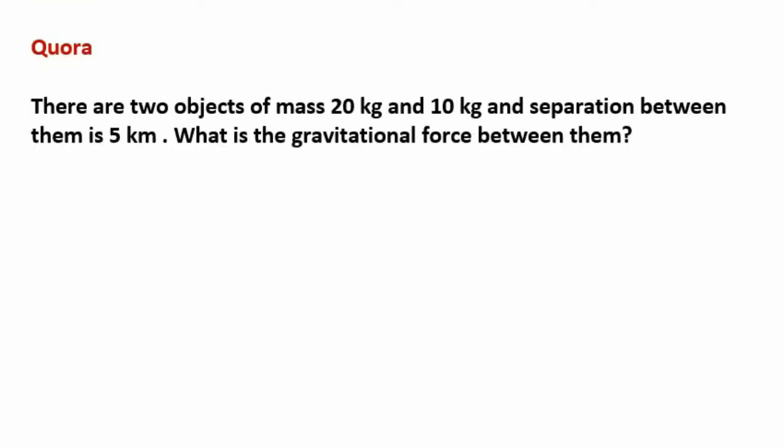Hello guys, welcome back to my channel. I have a question that a student asked me on Quora, so I thought why not make a video solution so you guys can also follow me on Quora and ask whatever questions you have. Let's get started. The question is: there are two objects of mass 20 kg and 10 kg, and separation between them is 5 kilometers. What is the gravitational force between them?